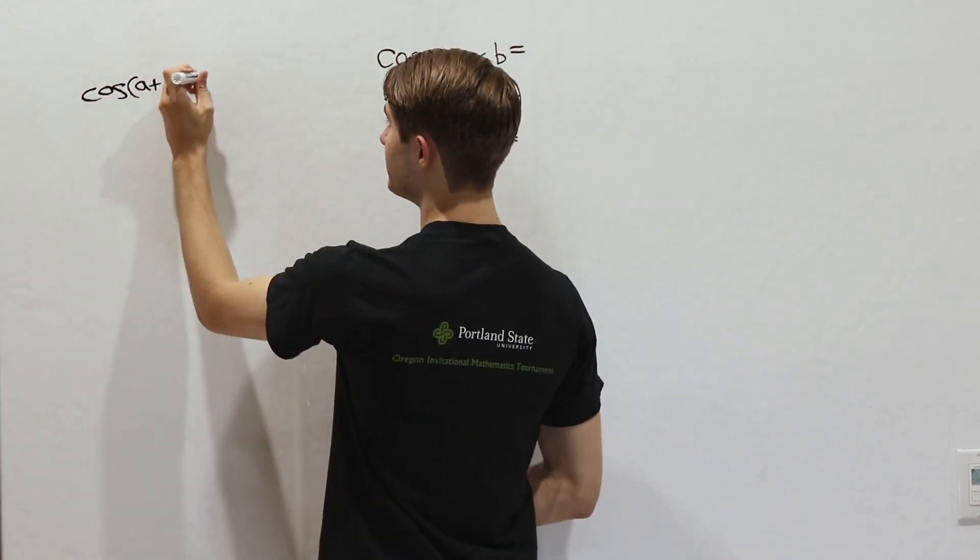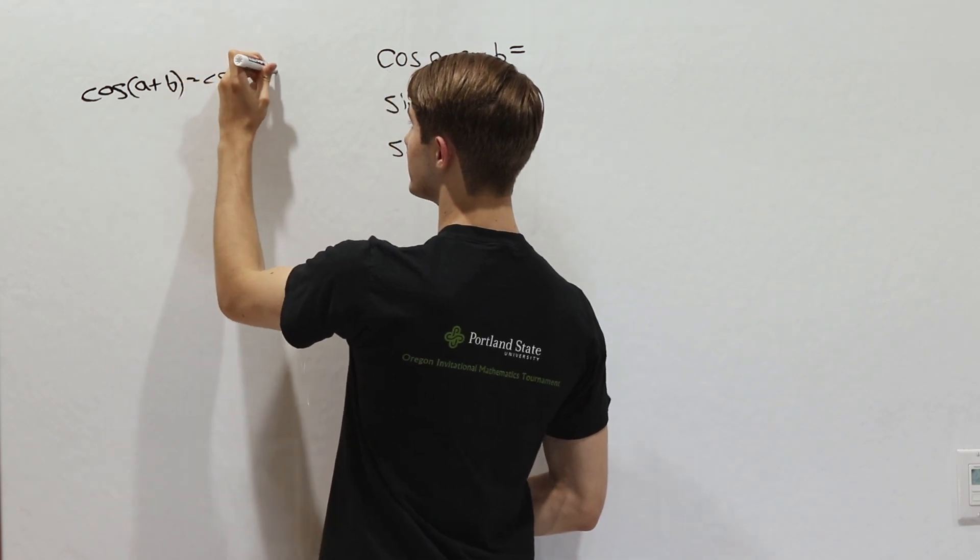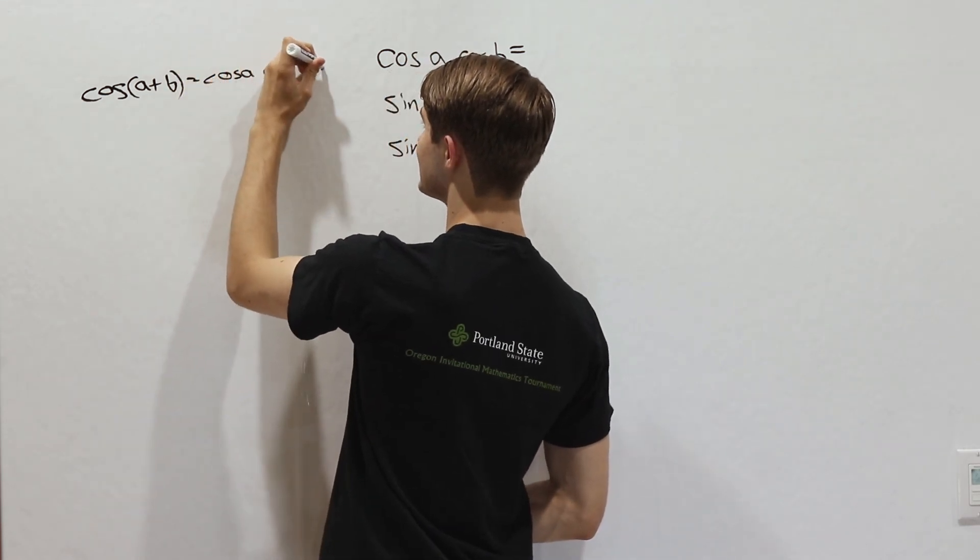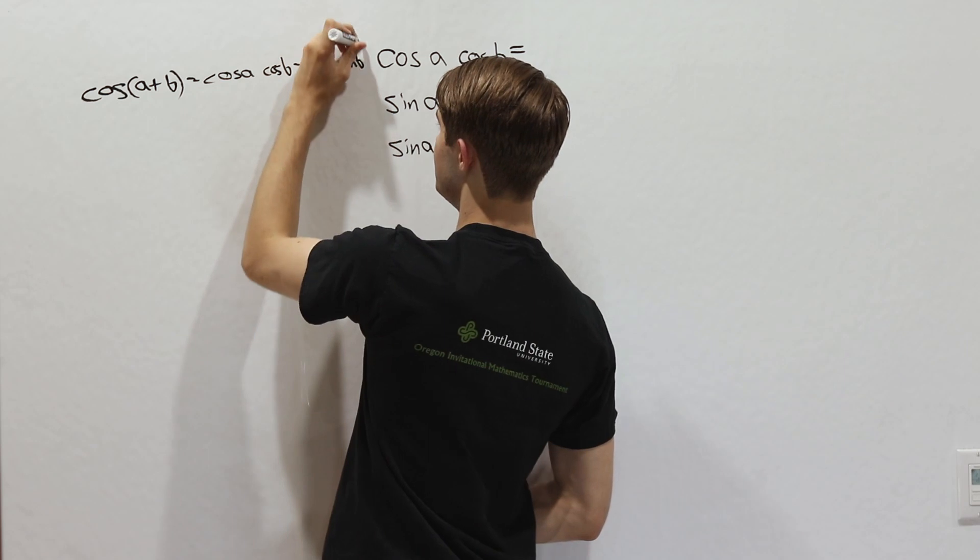We know if we expand this out that we'll get cosine a cosine b minus sine a sine b.